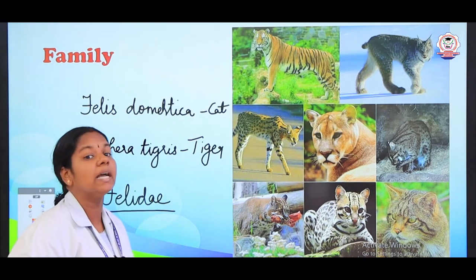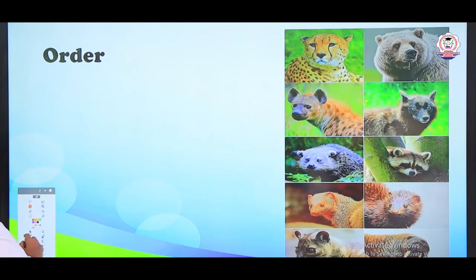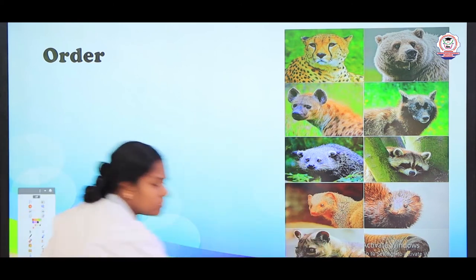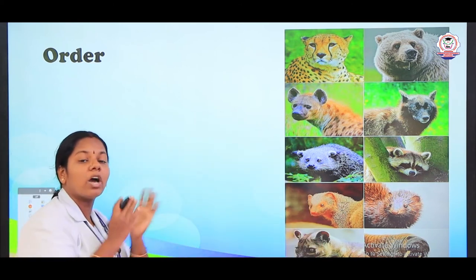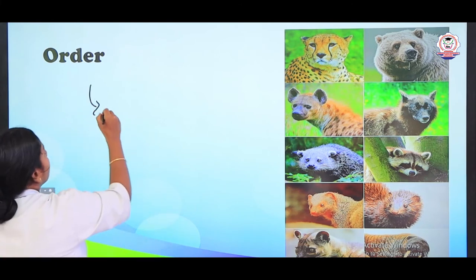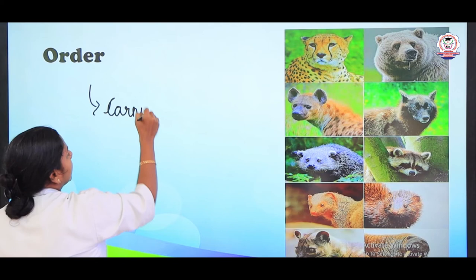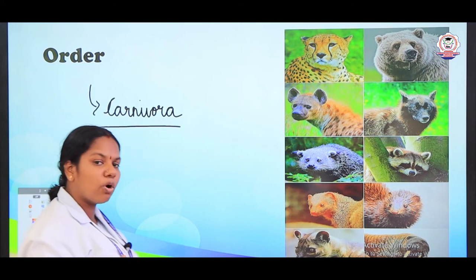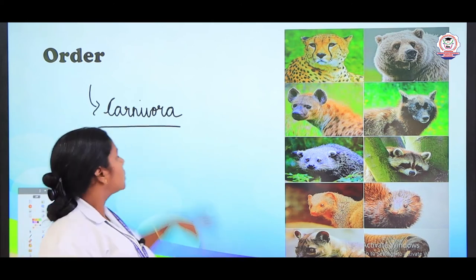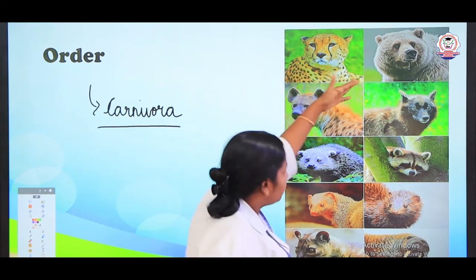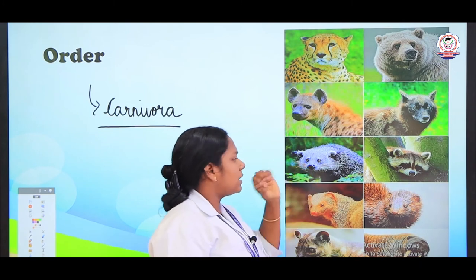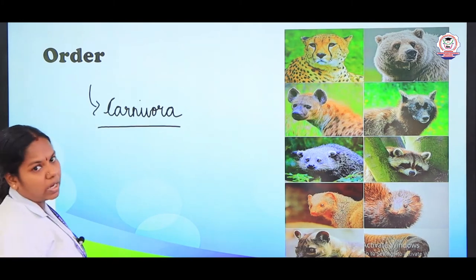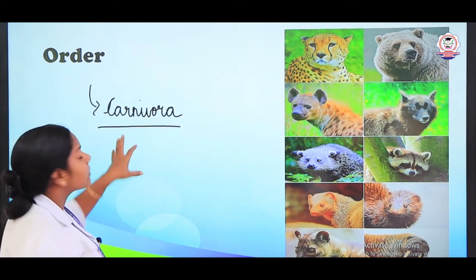Next we are going to see the order. The next higher level is order. These organisms may belong to different families but they are classified under the same order — Carnivora. The flesh eating animals are classified under carnivores. So tiger, bear, cat, orangutans, and wolf — everything is classified under Carnivora. The next level of family is order.